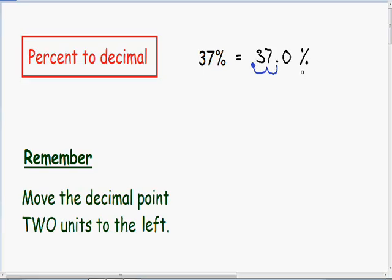After we move our decimal point we can erase our percent sign. After we move our point two units to the left, instead of 37 it becomes .370.